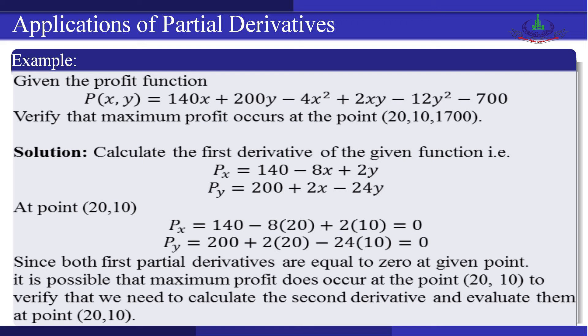At the point (20, 10): P_x = 140 − 8(20) + 2(10) = 0, and P_y = 200 + 2(20) − 24(10) = 0. Since both first-order partial derivatives are 0 at the given point, it is possible that maximum profit occurs at (20, 10). Now we verify this by calculating the second-order partial derivatives and applying the second derivatives test.